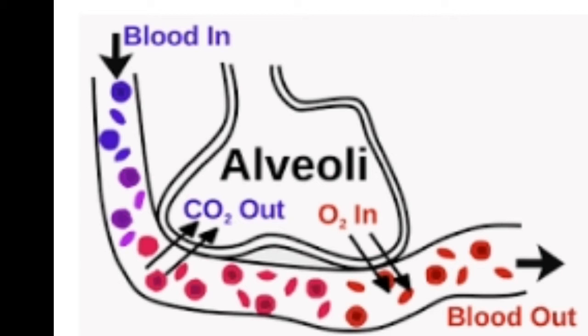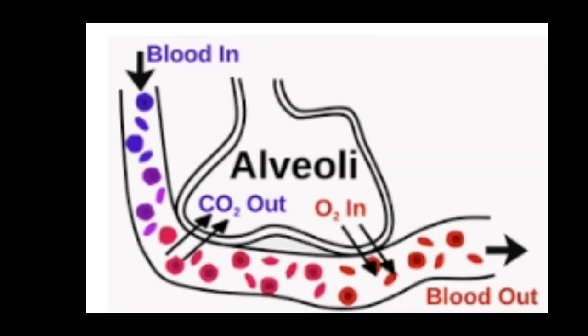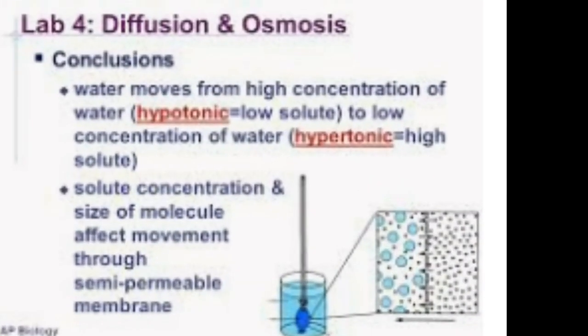In unicellular and simple multicellular organisms, diffusion is a major method by which transportation of materials occurs. For example, in amoeba, paramecium, Chlamydomonas, and some algae, as well as in simple multicellular organisms like hydra and Spirogyra, transportation occurs by the process of diffusion. In unicellular organisms, every function occurs through the process of diffusion.